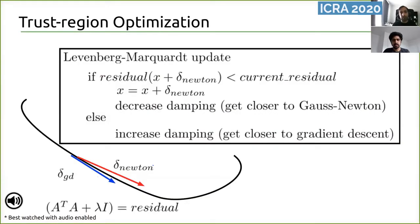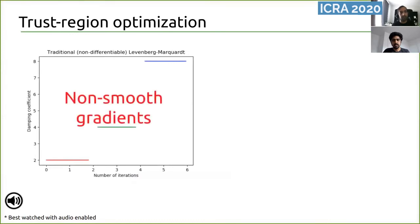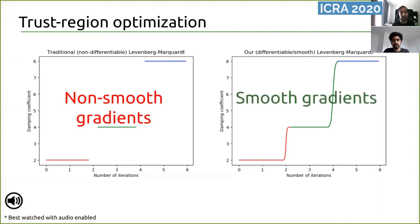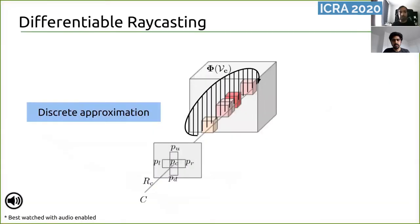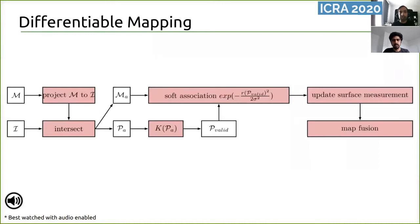Typical SLAM systems use trust region methods such as Levenberg-Marquardt, which switch between gradient descent and Gauss-Newton-like behaviors. Such switching results in abrupt jumps in function values, and hence the gradient is zero almost everywhere. We propose a new differentiable trust region optimizer, Grad LM, that re-parameterizes the damping coefficient and results in smoother gradients. For processes like raycasting, we make discrete approximations of gradients of rays, similar to image gradient operators. We make the entire dense mapping process differentiable by using soft associations and colonists.